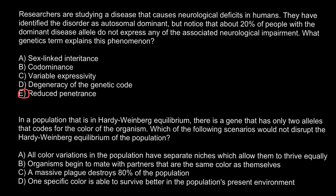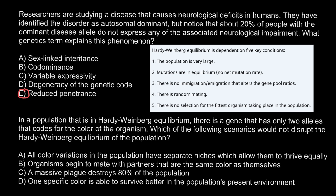Second question: In a population that is in Hardy-Weinberg equilibrium, there is a gene that has only two alleles that code for the color of the organism. Which of the following scenarios would NOT disrupt the Hardy-Weinberg equilibrium of the population? Hardy-Weinberg equilibrium depends on five key conditions: first, the population is very large; second, mutations are in equilibrium with no net mutation rate; and third, there is no migration or immigration that alters the gene pool ratios.